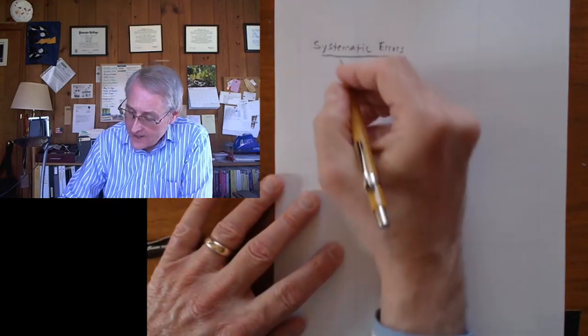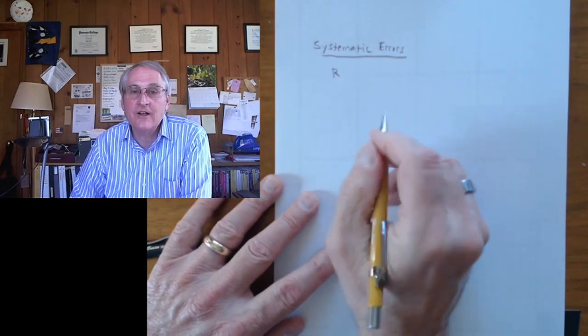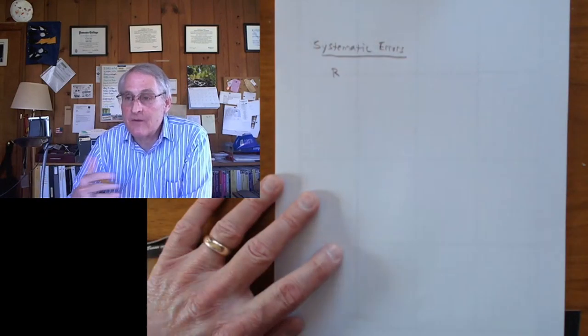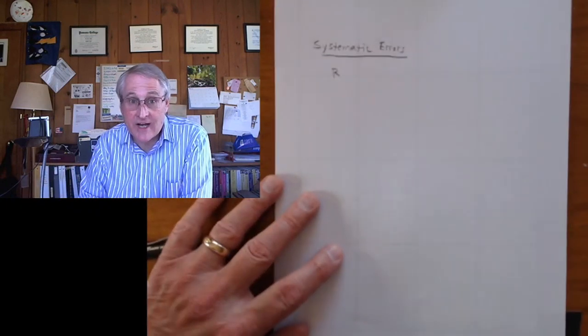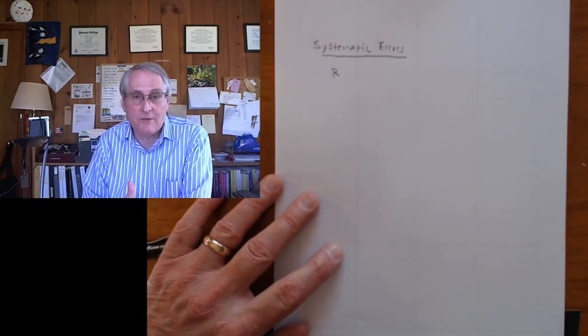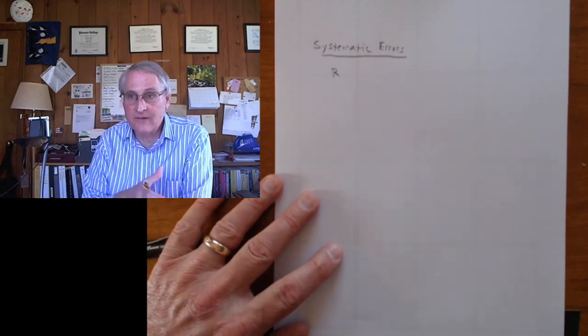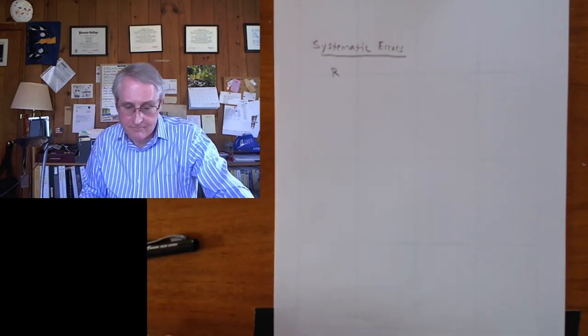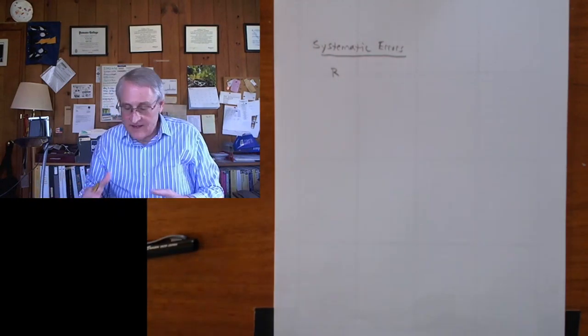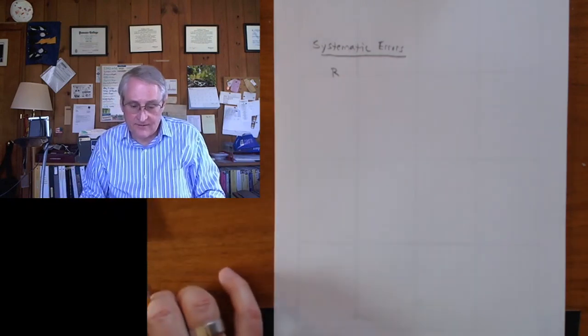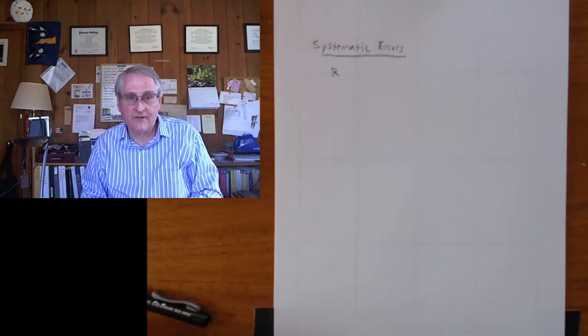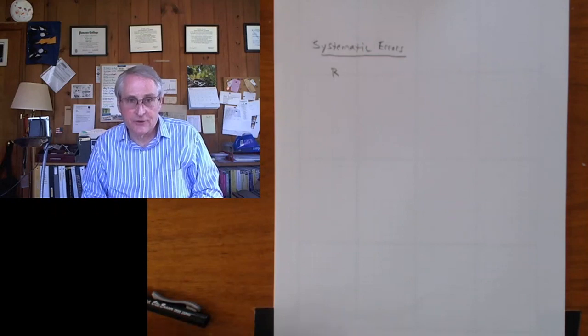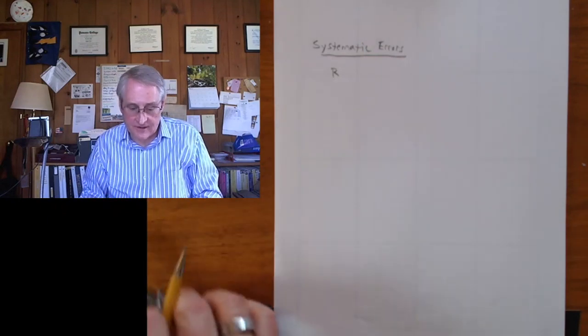So, random errors are random. But the idea is that they vary back and forth, up and down, and they'll average out to zero. That's why we take multiple measurements. Because if there's randomness in the process of making a measurement, then over making many measurements, on average, they will average out to zero. And you'll get a better measure of the true value that underlies it.